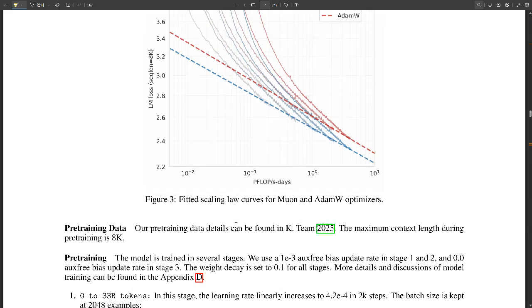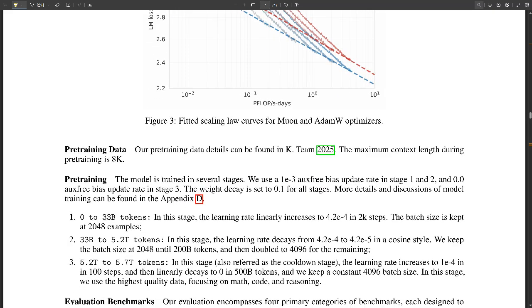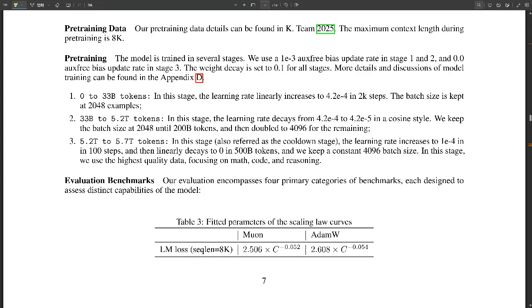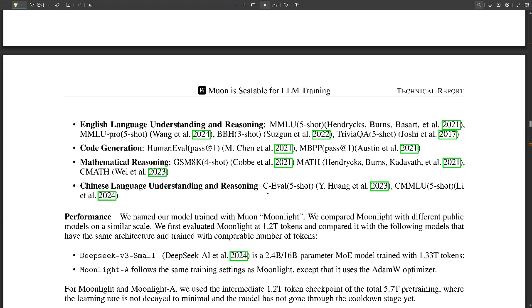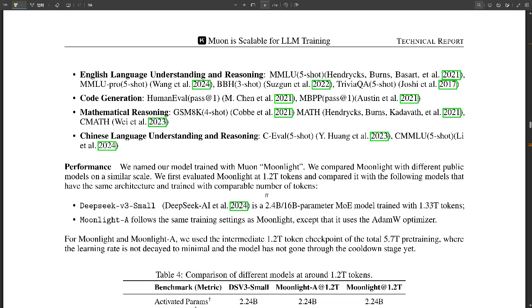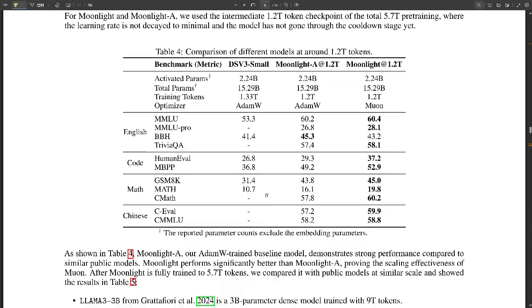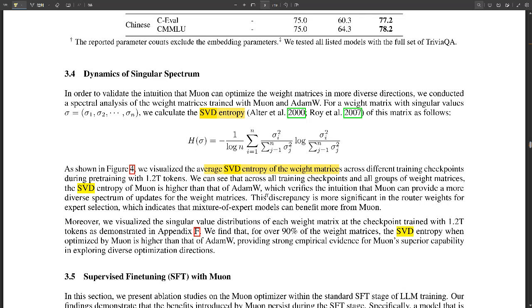One of the things that makes it so interesting is something called SVD entropy. Okay, another new term. I'm all ears, but keep it simple for us non-mathematicians out there. What is SVD entropy, and what does it tell us about Muon? Okay, so remember how we talked about Muon encouraging the model to explore a wider range of possibilities during training? Yeah. Well, SVD entropy is a way to measure how diversely those model weights are updated. The higher the SVD entropy, the more exploration the model is doing.